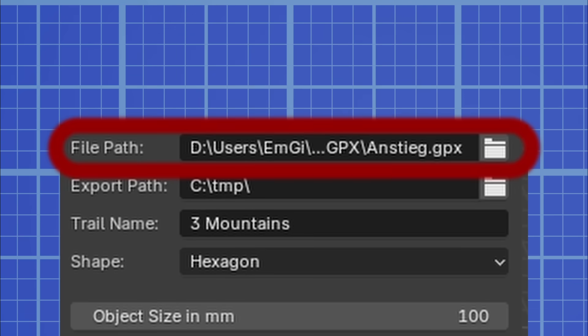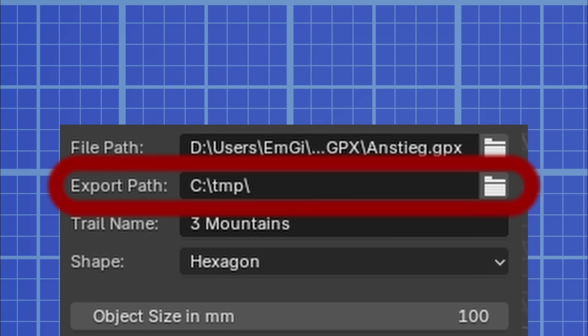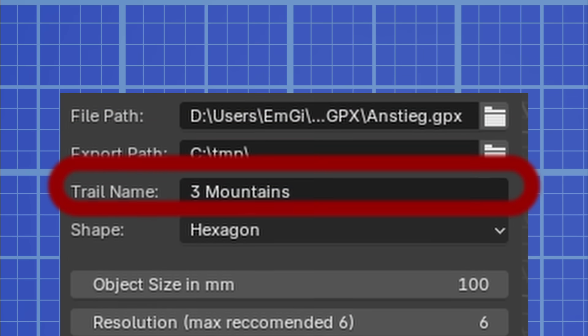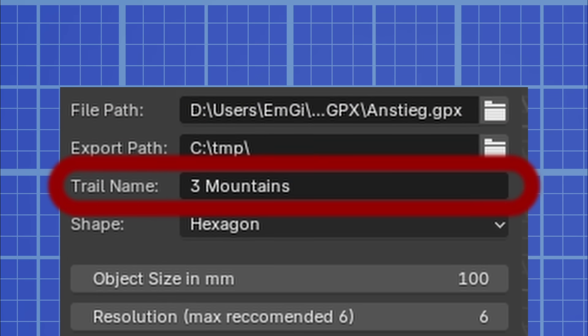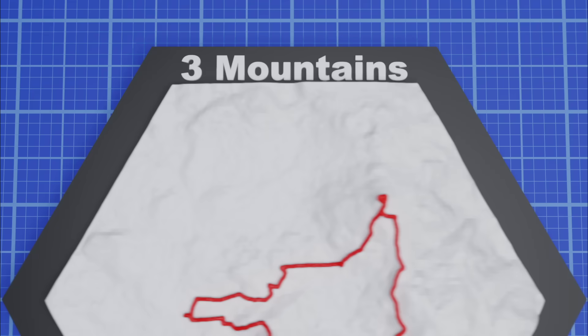The first one is the file path of the GPX file you want to load. The export path is where your exported STL file will be saved. Trail name is the name of the exported file as well as the display text for some variations.